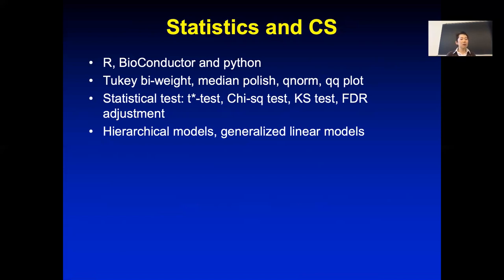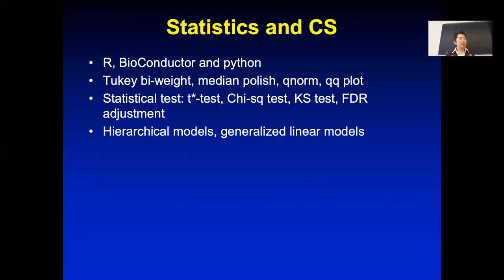We talked about hierarchical models — how to borrow information from other genes when estimating variance, whether for microarrays, expression indices, or read count expression of a gene. Many genomics experiments have only two to three replicates, so you can't estimate variance very well. Hierarchical models use all the genes to help estimate a more accurate variance when the data you have is too noisy or has unexpected noise.